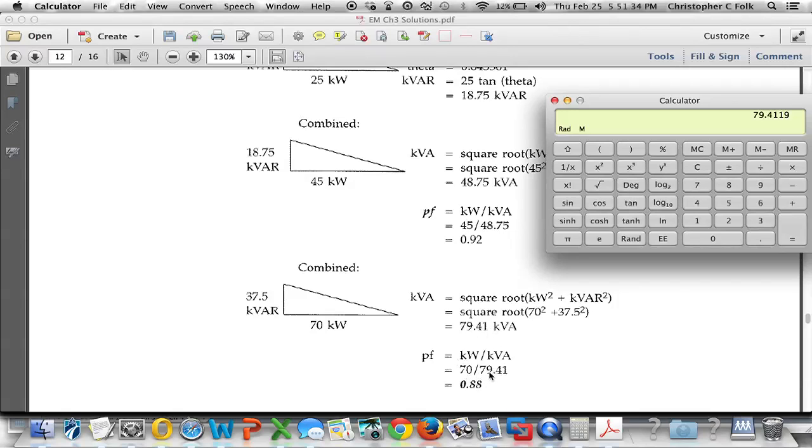And if I divide that into the 70 kilowatts of true power, my new combined two motor, one bank of incandescent lights power factor becomes 0.88. We'll do that again.